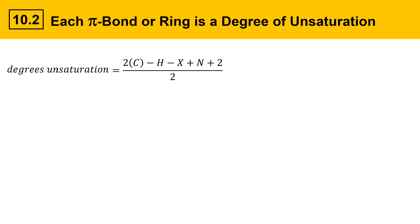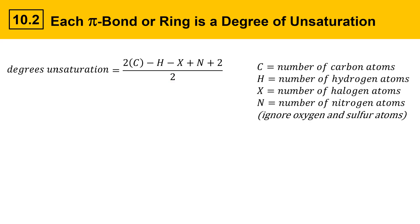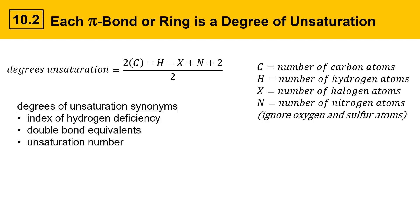Let's take a look at the formula for degrees of unsaturation. Degrees of unsaturation equals two times the number of carbons, minus the number of hydrogens, minus the number of halogen atoms if present, plus the number of nitrogens if present, plus two — all divided by two. For purposes of this equation, you can ignore oxygen and sulfur atoms; they don't contribute to degrees of unsaturation. There are a number of synonyms: index of hydrogen deficiency, double bond equivalence, and unsaturation number all refer to the same calculation to determine the number of pi bonds or rings.